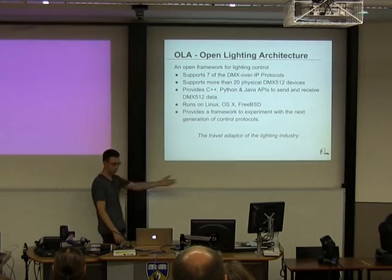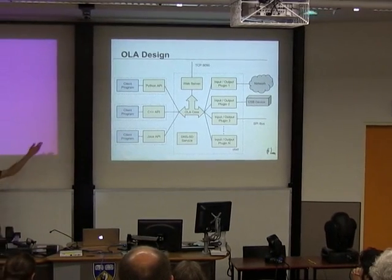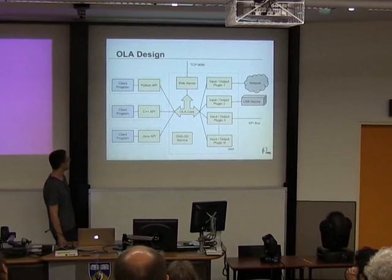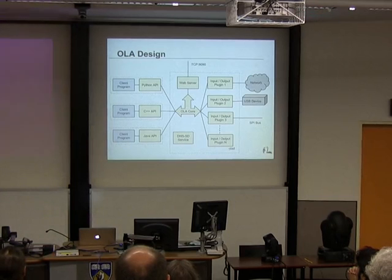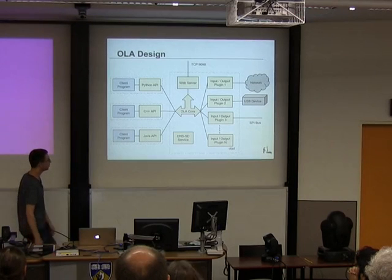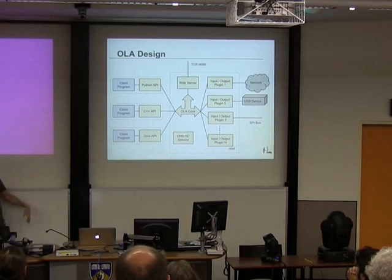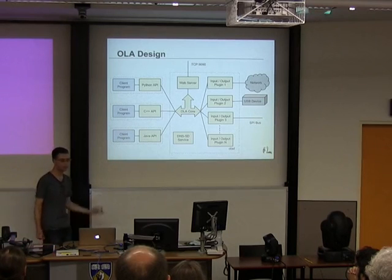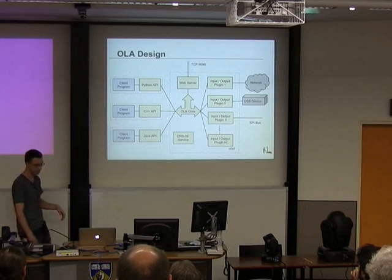We really need a way to prototype new protocols before pushing them through the standards process. Briefly on the design: the dotted lines are process boundaries — this is OLA-D, the daemon. It has a bunch of plugins, each responsible for either a network protocol or a class of hardware such as USB devices or SPI buses. Other programs use the APIs to talk to the core controller, and you can write client programs to generate DMX data and send it out through whichever mechanism you like. OLA itself doesn't generate DMX data — that's left to someone else. It's just a transport mechanism. It also has a web server for configuration and registers itself in DNS-SD so you can find it easily on the network.